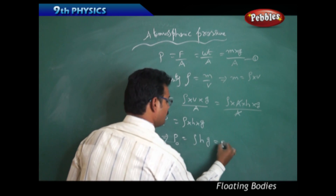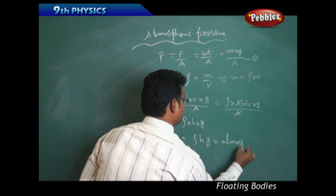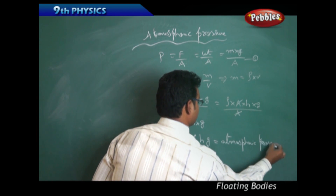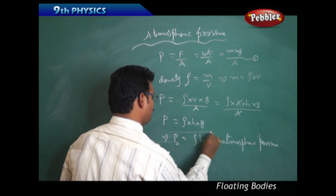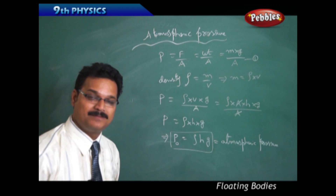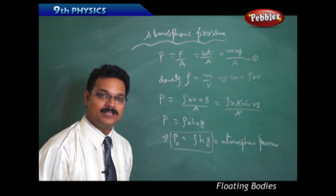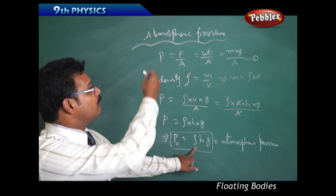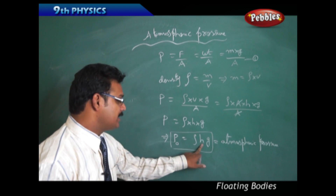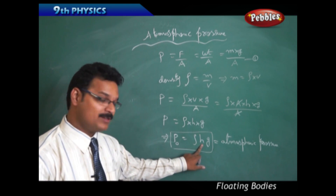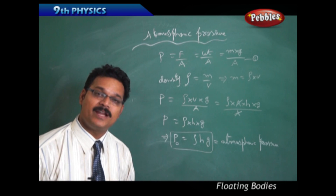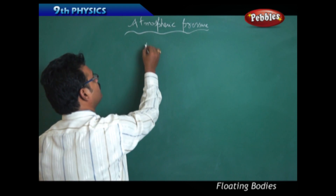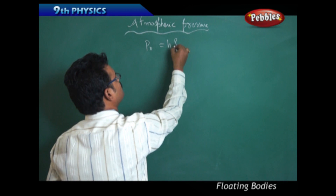This pressure P can be written as P₀, and this is called atmospheric pressure. The formula for atmospheric pressure is P₀ equals rho H G, where rho is the density of the atmosphere, H is the height (or depth), and G is acceleration due to gravity.